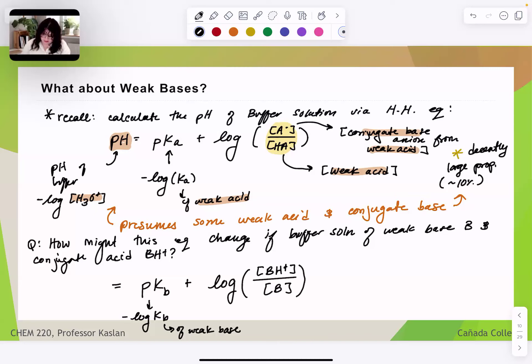So the form of Henderson-Hasselbalch is always conjugate over the thing that conjugate came from. So BH+, is the concentration of conjugate acid ion from the weak base B. And then concentration B is our concentration of weak base. So we are talking about, again, Kb, bases, weak base, the conjugate acid of a weak base. All right.